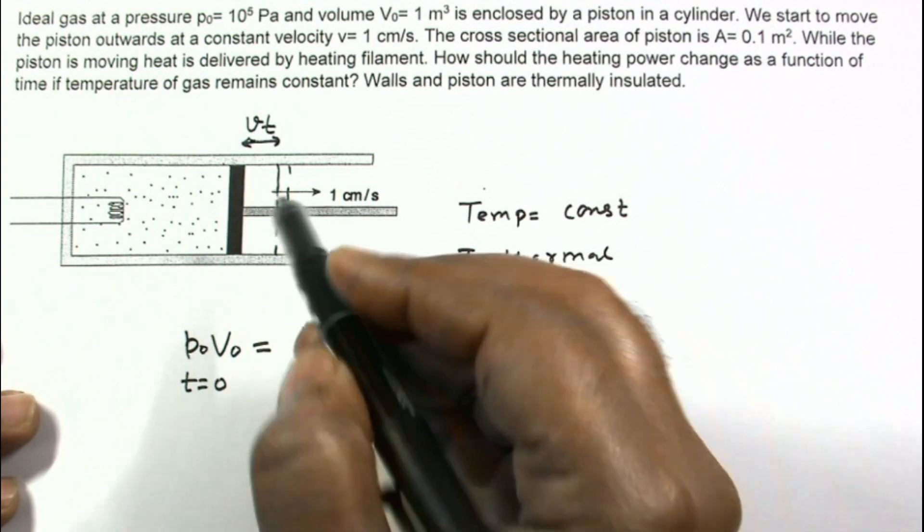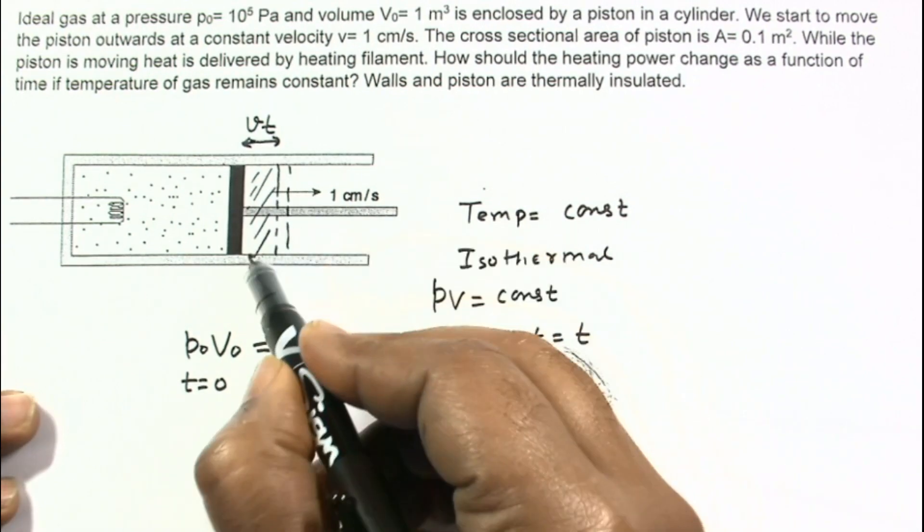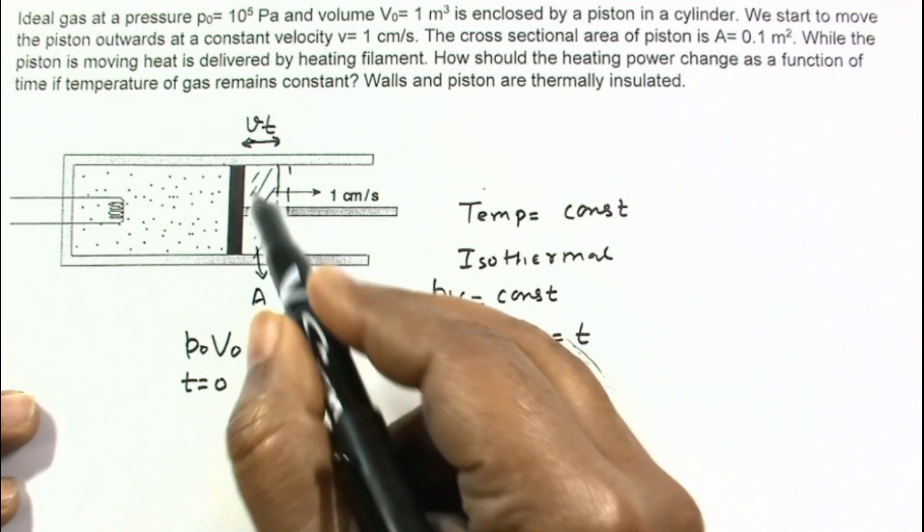So volume, extra volume will be, this extra volume is area multiplied by this distance.